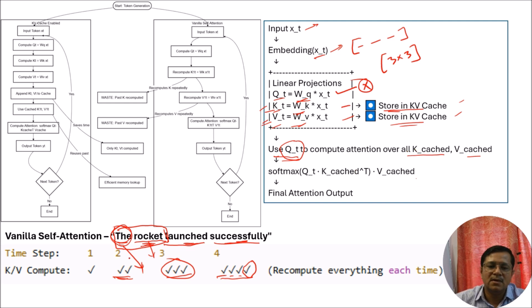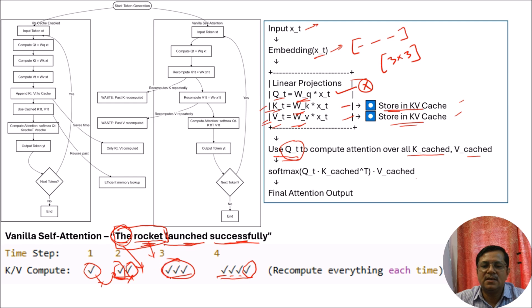For example, suppose we take the first token's key and value and put them in the cache after calculation. Then the next time, those values will directly come from the cache. In the second phase, we put the second token's values also in the cache. So in the third phase, we will take both values from the cache and only for the new token will we do new calculations. Every time we will do just one new calculation for new words only.